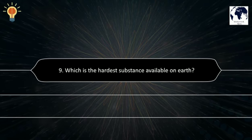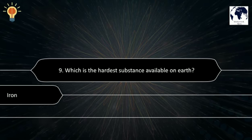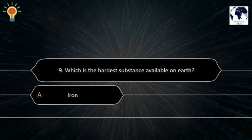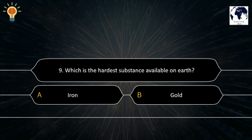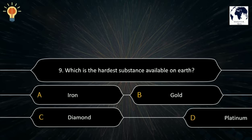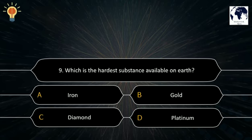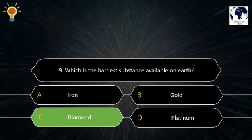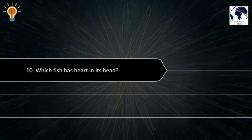Question number 9. Which is the hardest substance available on earth? A. Iron. B. Gold. C. Diamond. D. Platinum. The correct answer is C. Diamond.